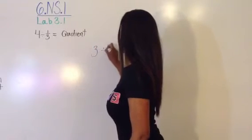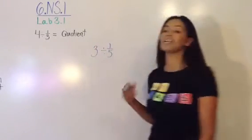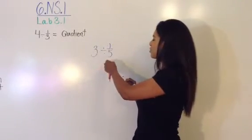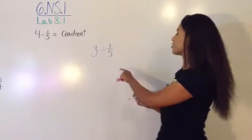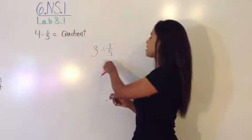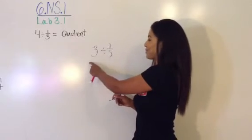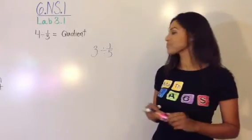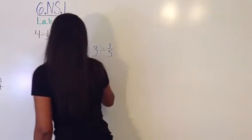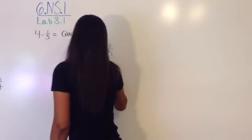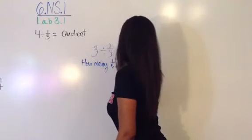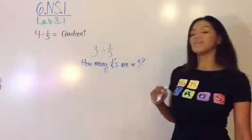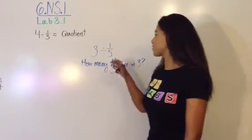We're going to go through those three parts together, and then the last one you'll do on your own. The first part on the lab says, what's the meaning of this? We're going to write one sentence here, and the meaning is: how many one-fifths go into three? Or, how many one-fifths are in three? Go ahead and write that down.